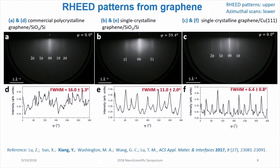There are two important features on the RHEED patterns. In all of those patterns, we observe continuous vertical streaks. The fact that those streaks are continuous indicates that what we have are monolayer materials instead of multilayer materials.